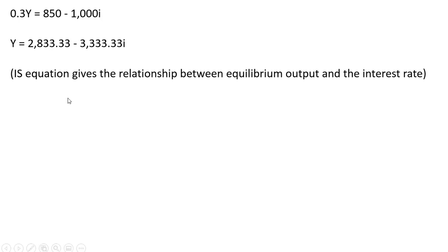We have our IS equation, which just gives a relationship between equilibrium output and the interest rate. And our LM curve here is horizontal at 5%. So what we're going to do is plug in this 0.05 in for I, and we have our equilibrium real output.